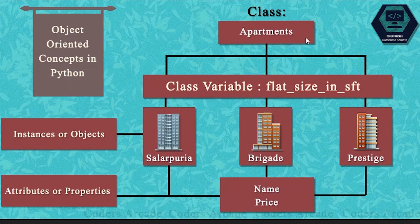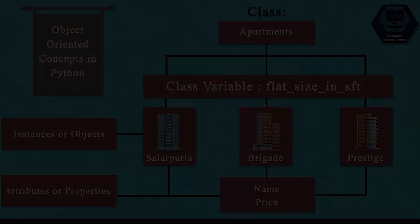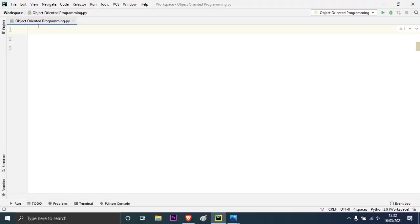Now let us move on to PyCharm so that you can see a real world example where I will show you a program on how to create classes, instantiate objects, and assign attributes to them. Here you can see that I have already created a Python file named 'object-oriented programming' and now I will show you how to create a class.